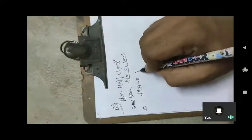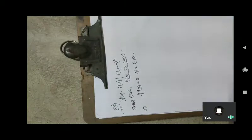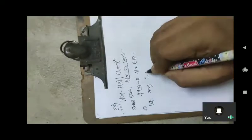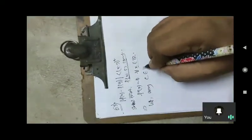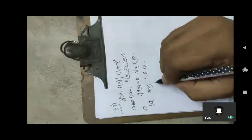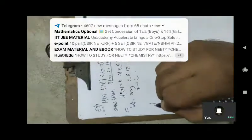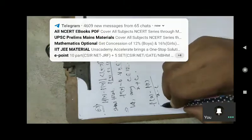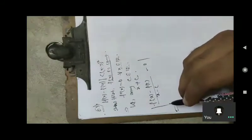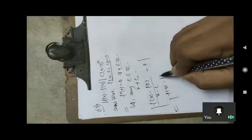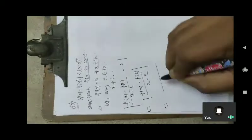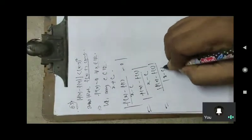We have to show that f'(x) = 0 for all x belonging to ℝ. Let any c, and consider the limit: [f(x) - f(c)] / (x - c) minus 0. I will say that η is equal to [f(x) - f(c)] / (x - c) minus 0.